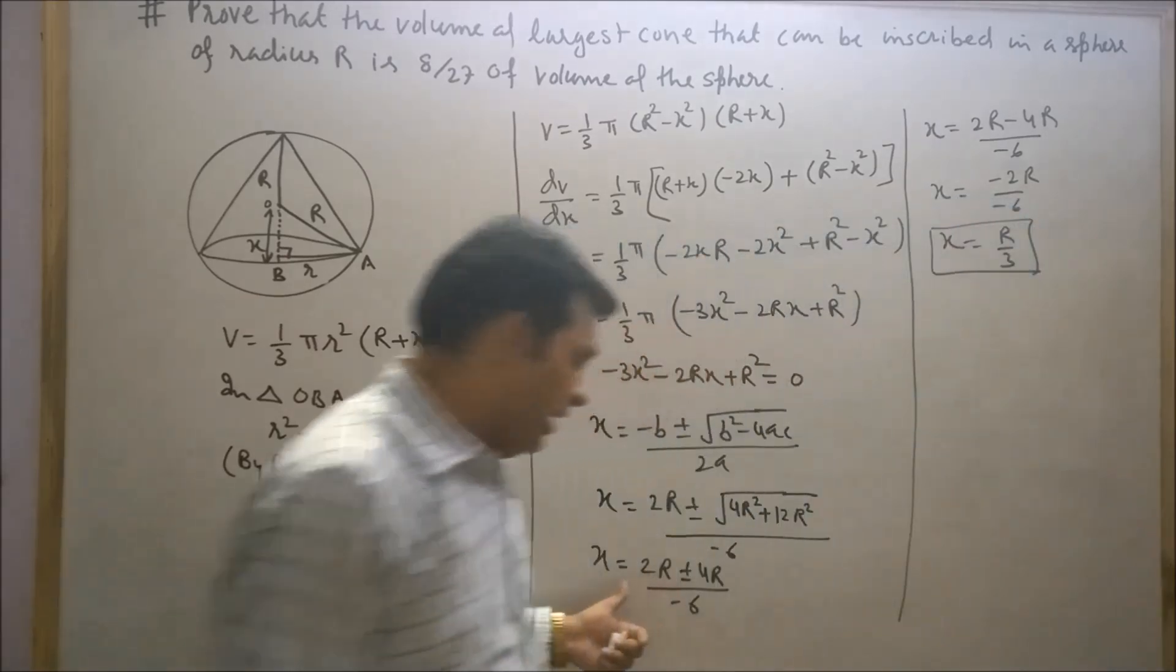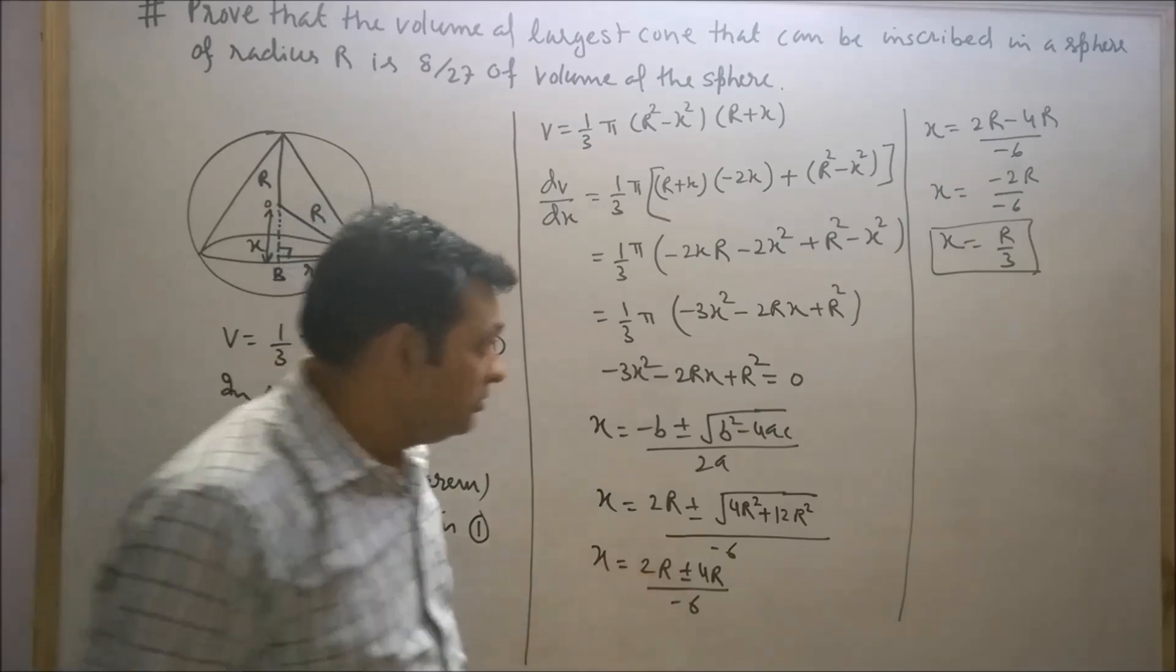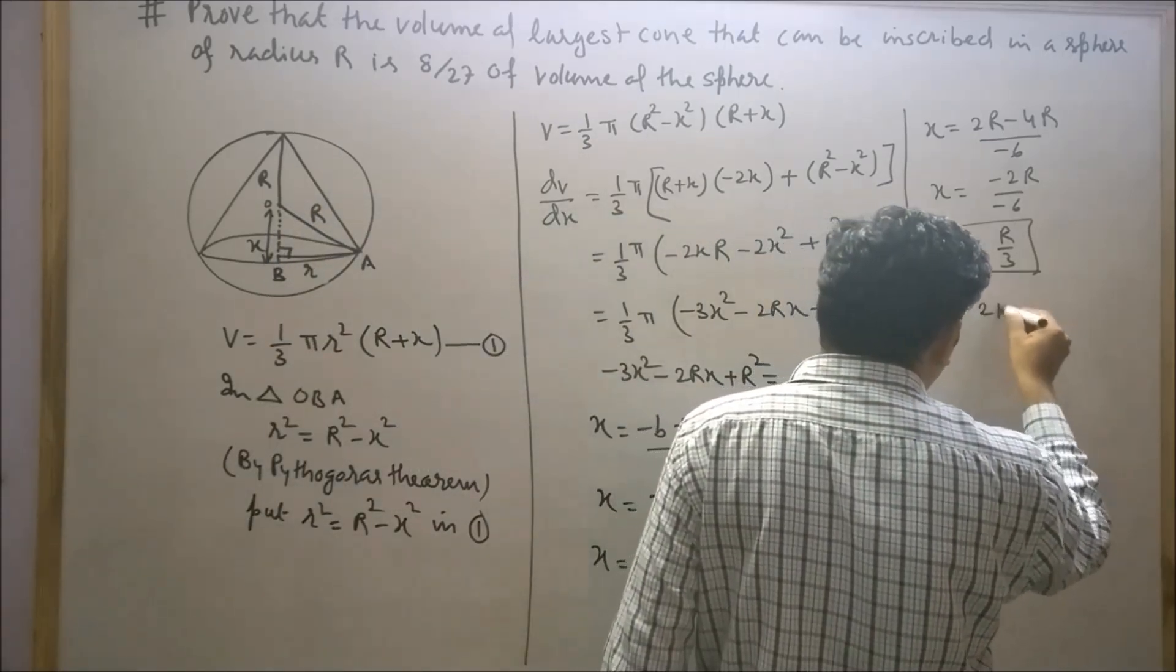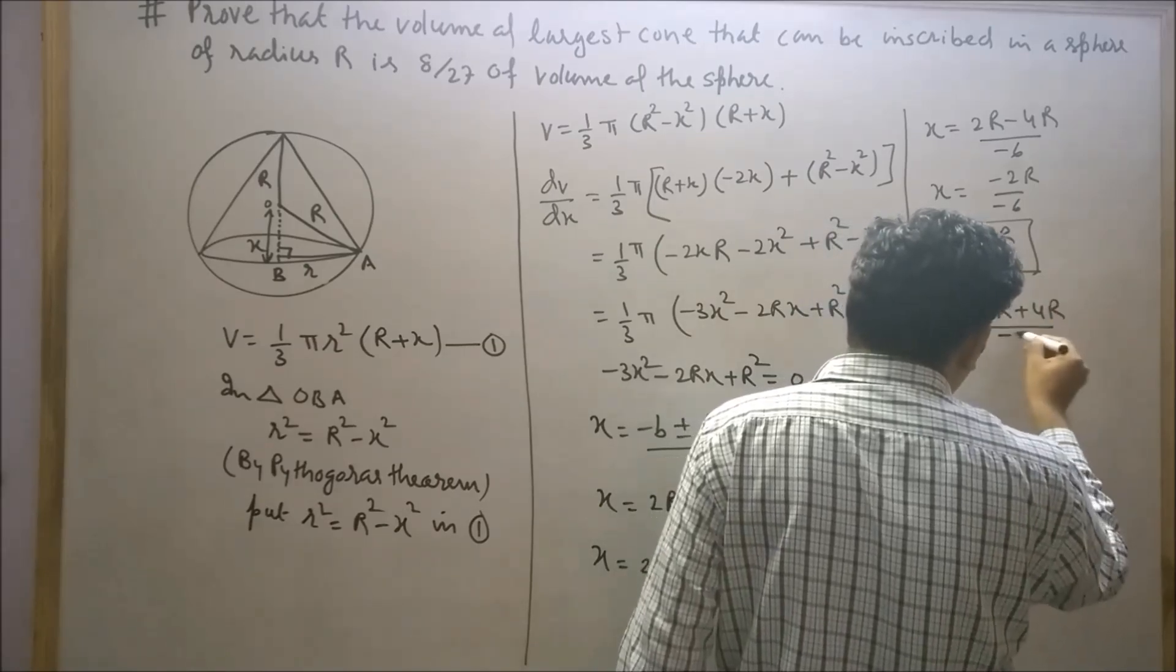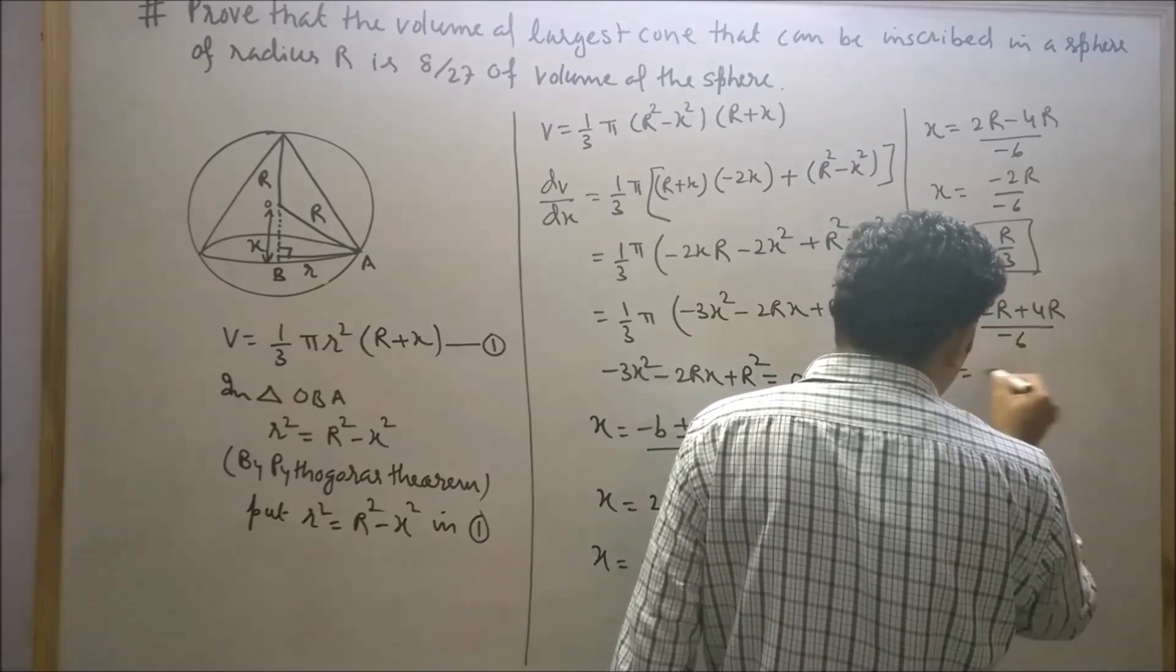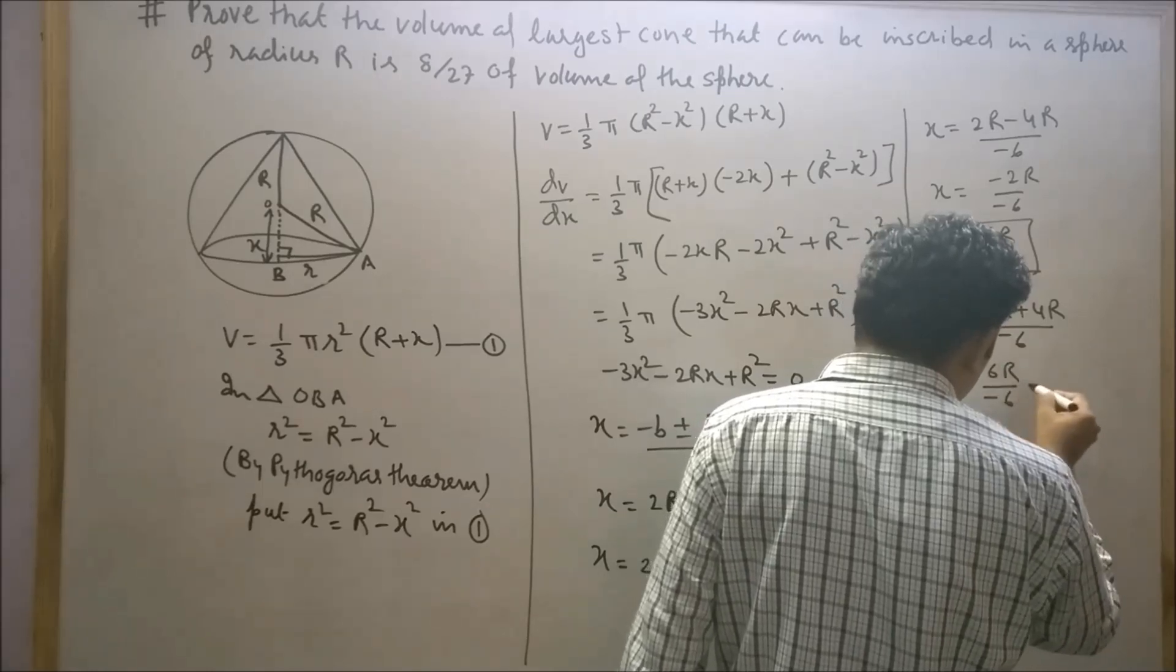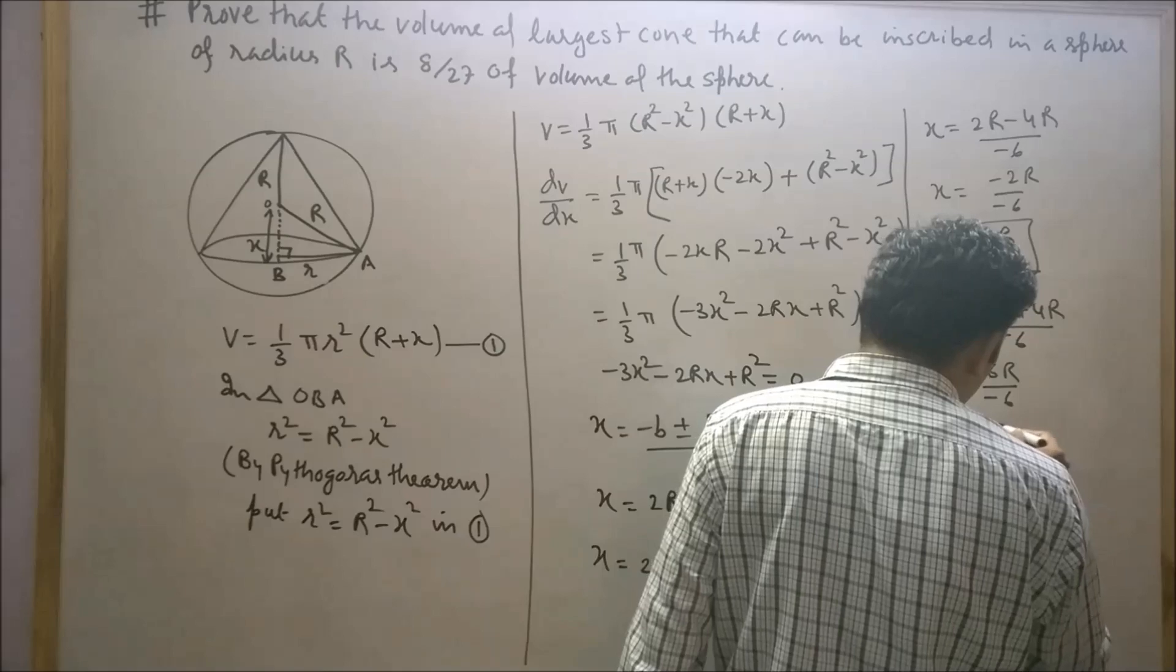Or x can be obtained by using the other root: x equals (2R + 4R)/(-6) = -6R/(-6). But x cannot equal -R.